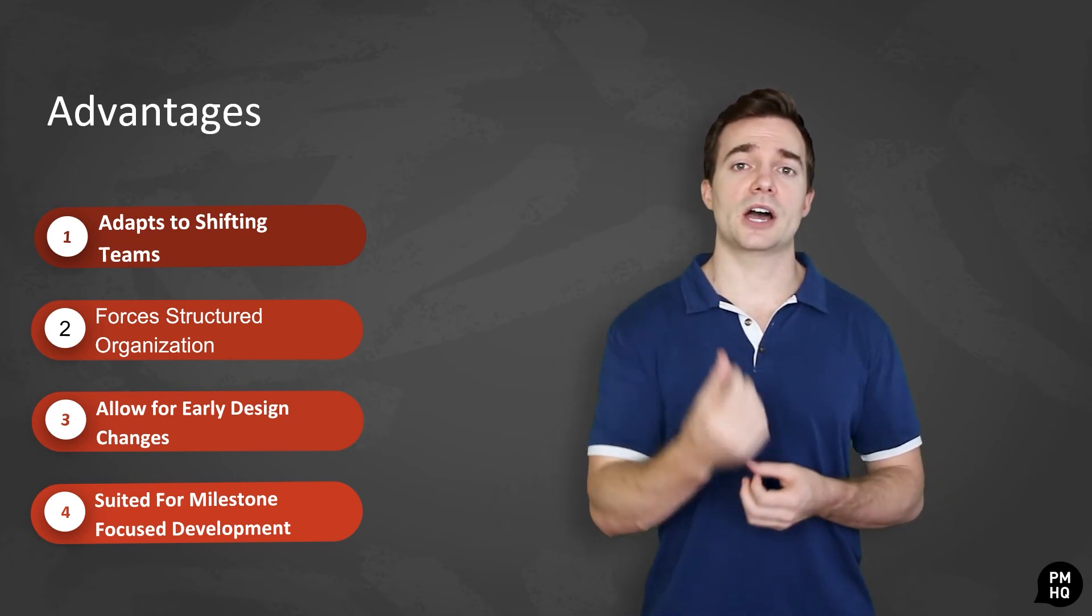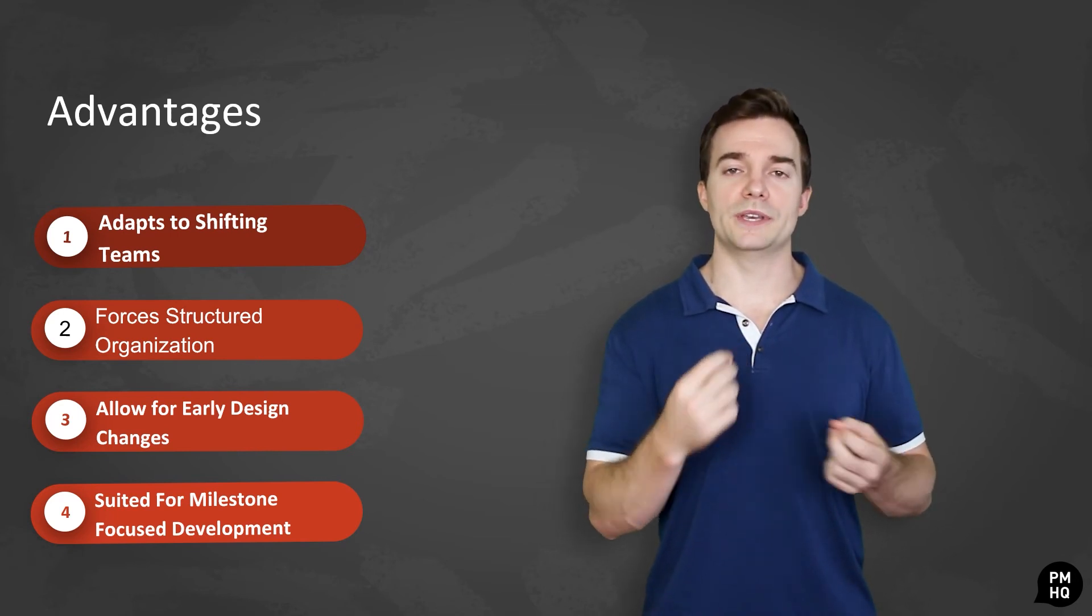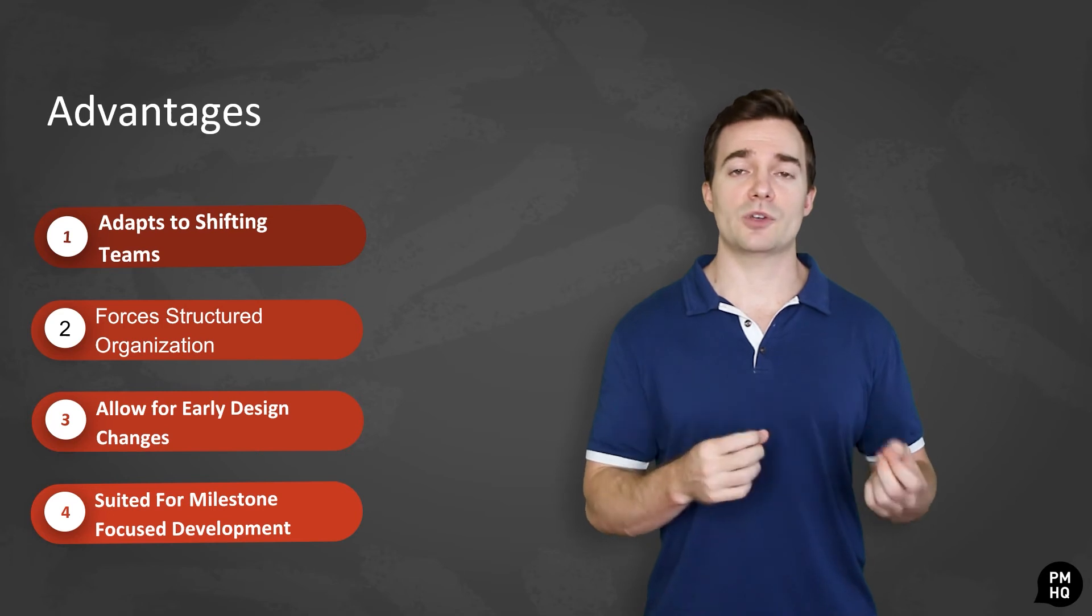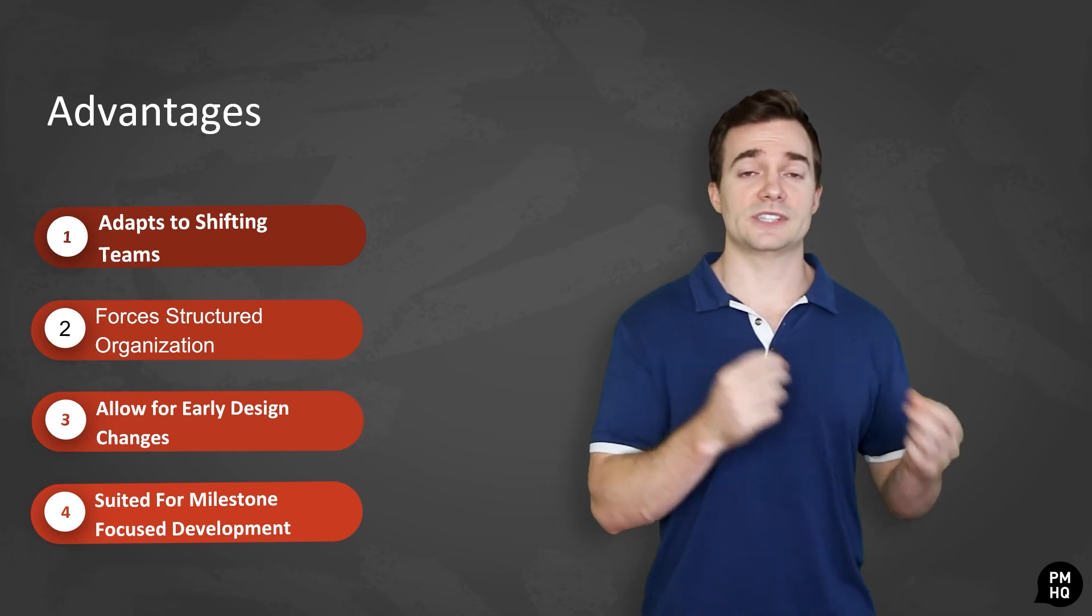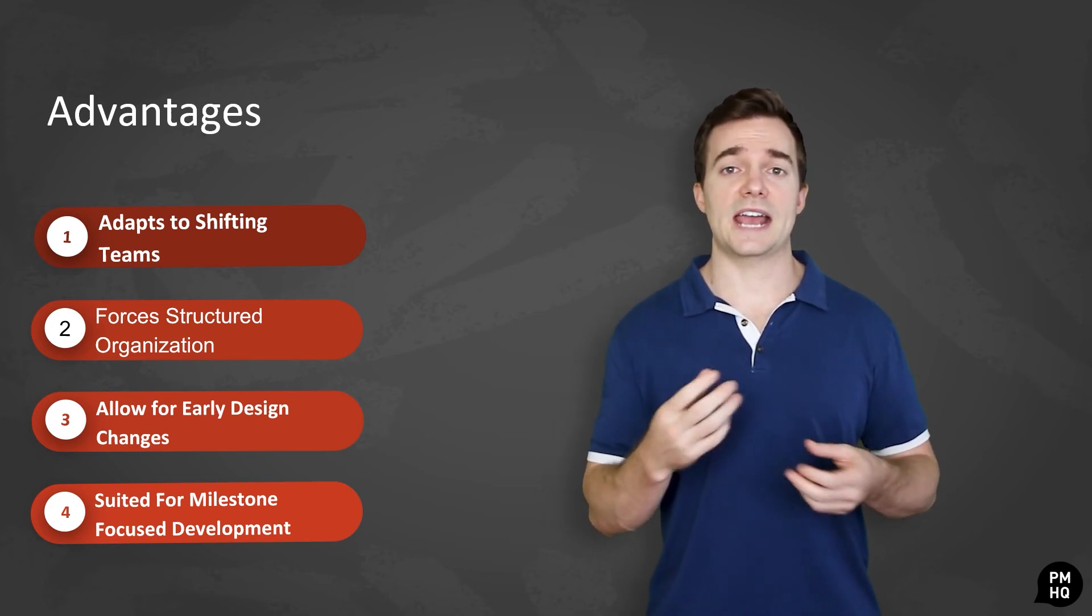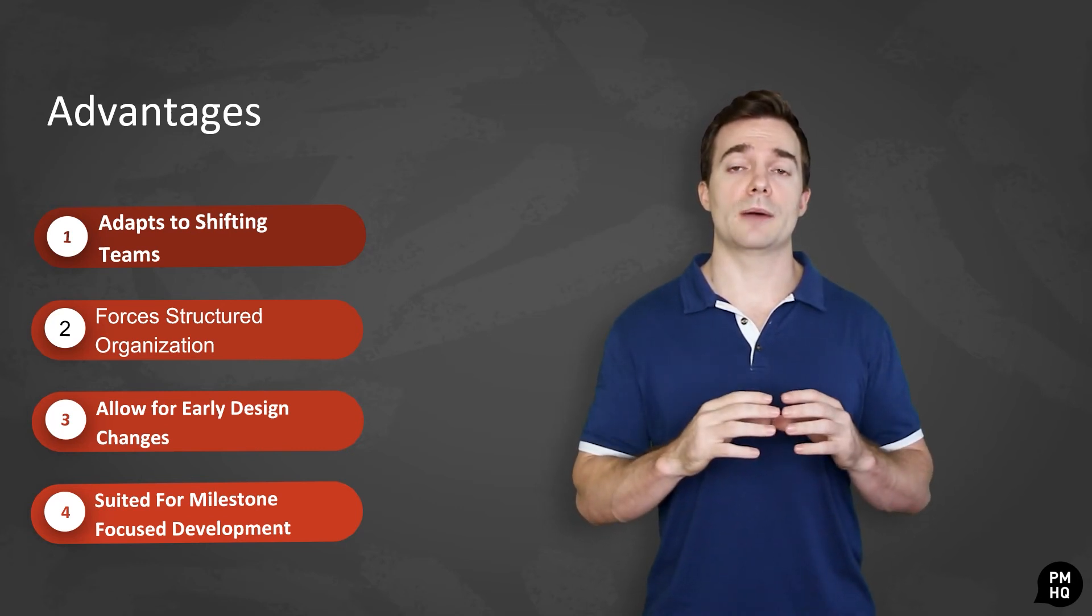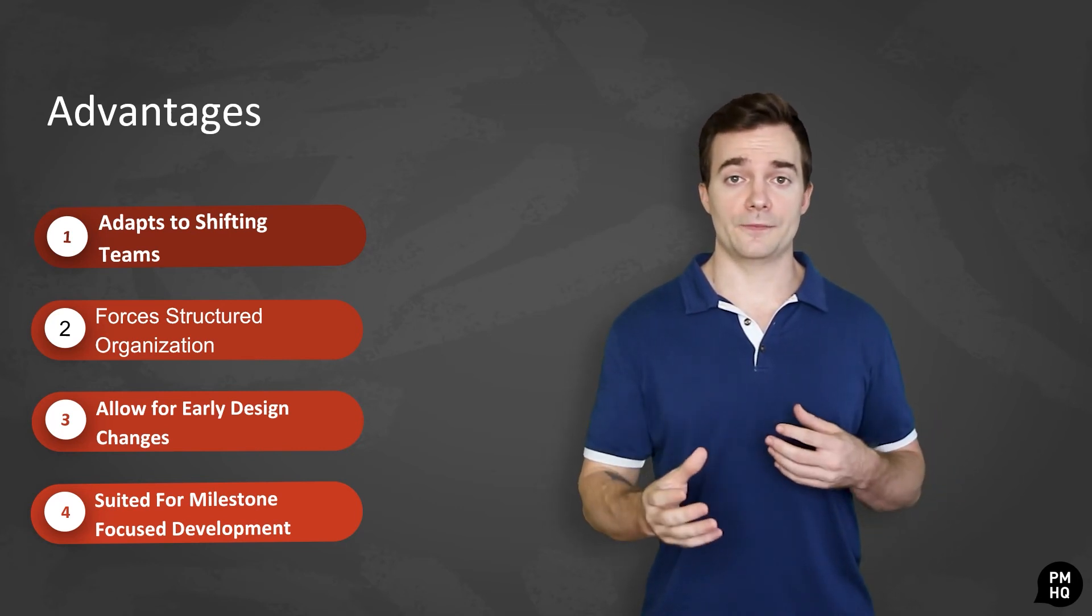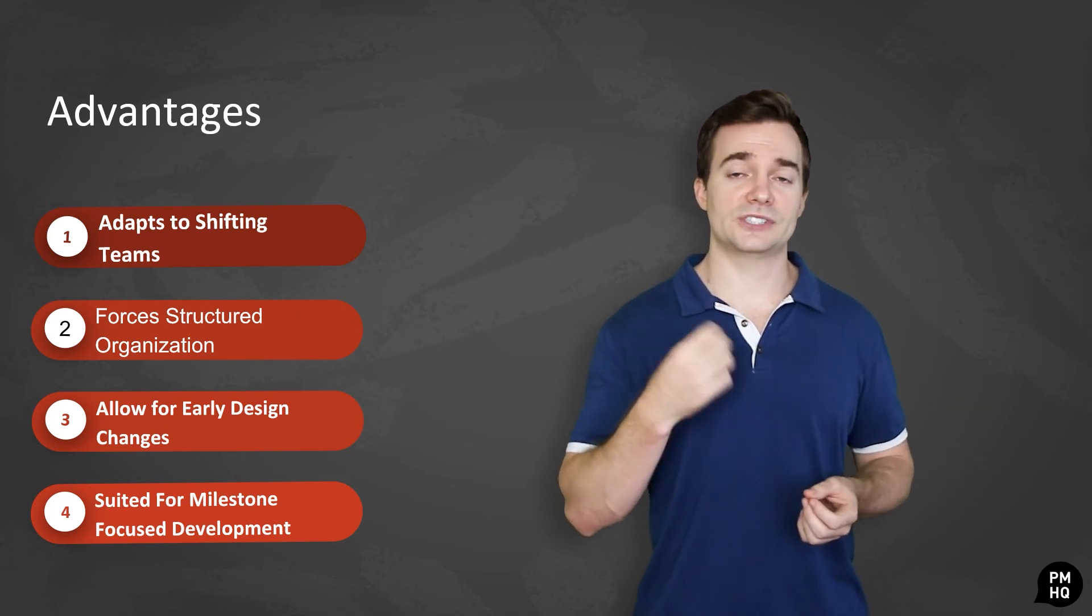Both the development team and customers spend time early in the lifecycle agreeing on what will be delivered, which allows everyone to have a better idea of what to expect in terms of size, cost, and the timeline for the product. Since the design aspect is completed fairly early on, software engineering can work on multiple components in parallel. As a result, there is tangible output at the end of every single stage, which means that all stakeholders can feel more comfortable seeing progress being made.